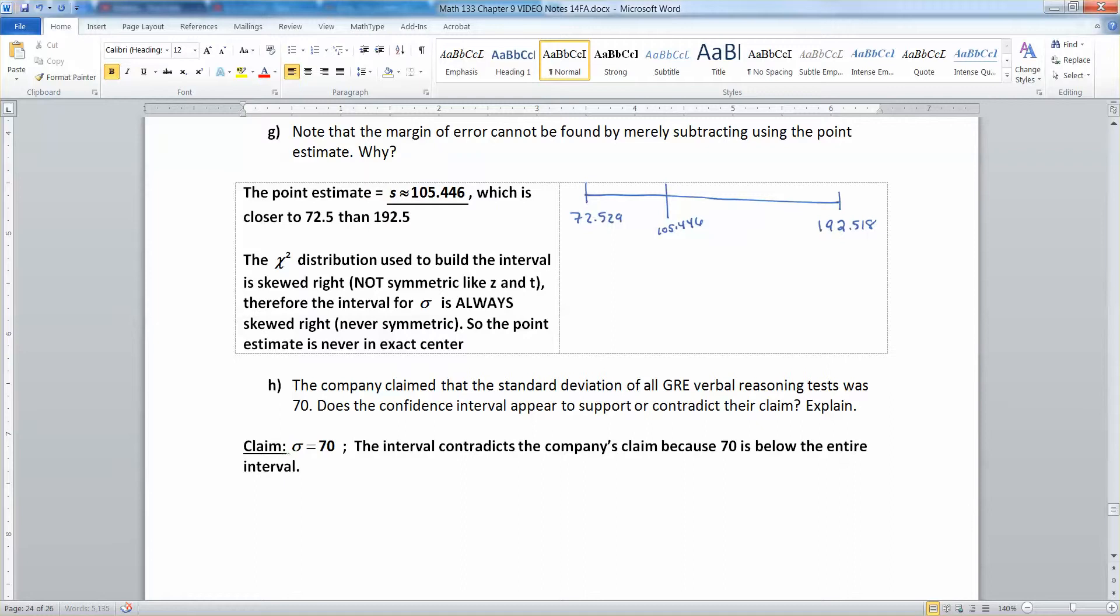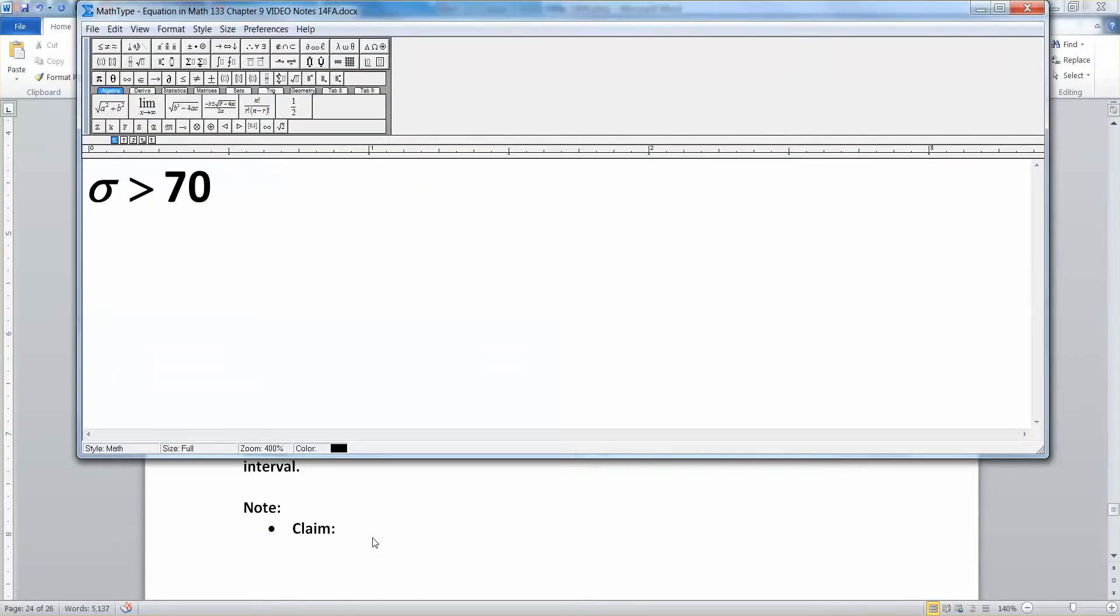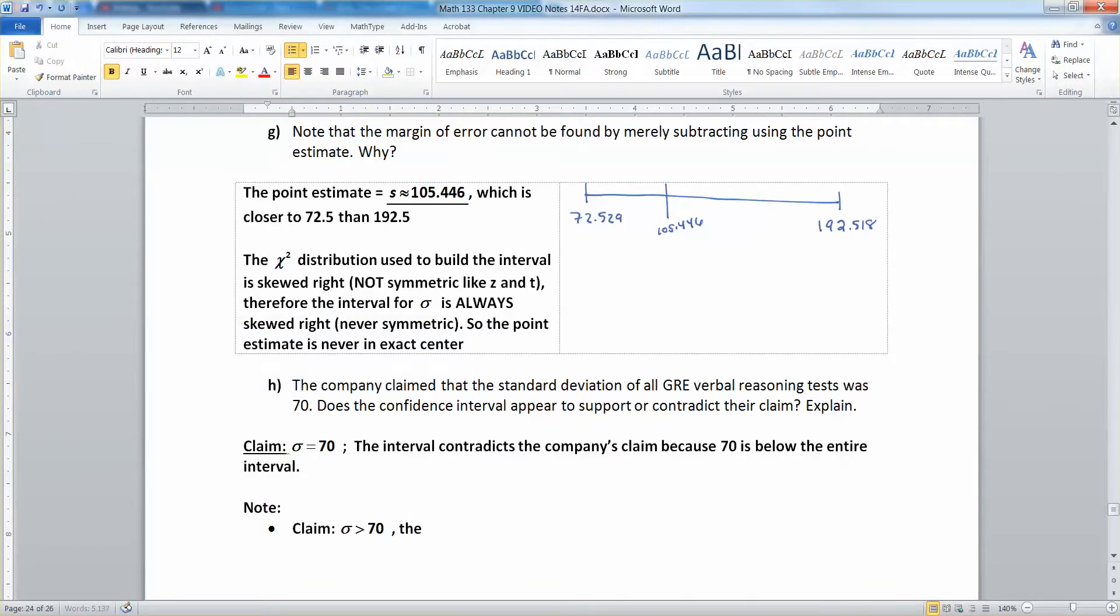Now let me just make a couple notes. What if they had claimed something else? What if they had claimed that sigma was greater than 70? If they claim sigma was greater than 70, then the interval supports them because the entire interval is above 70.